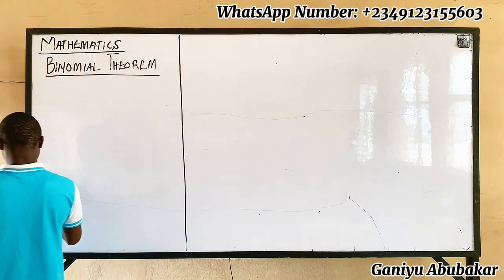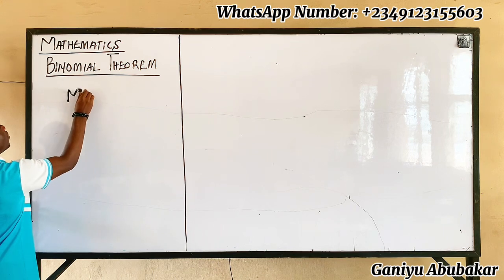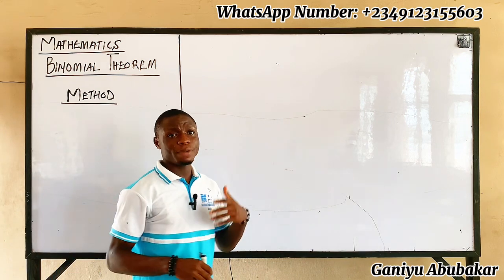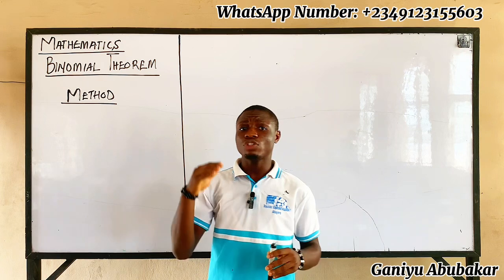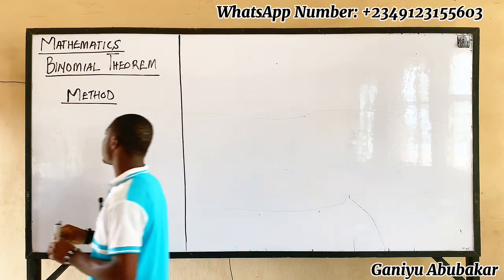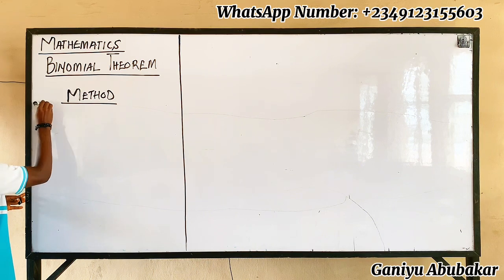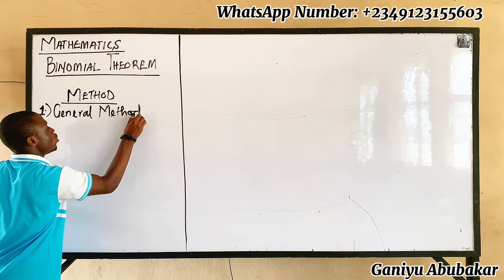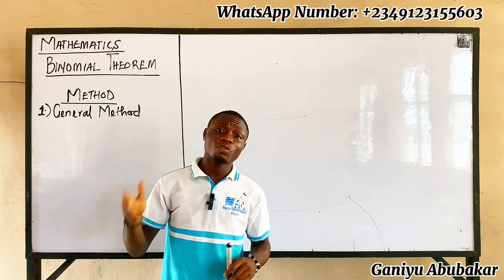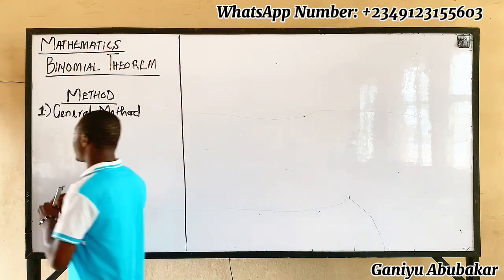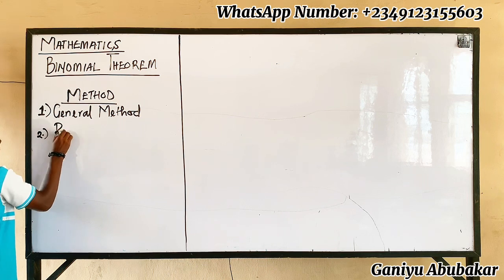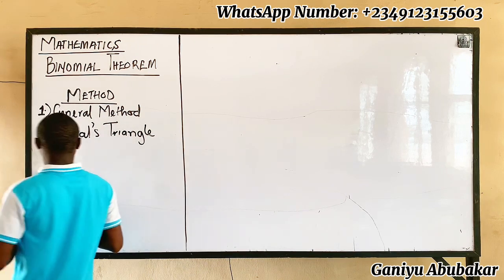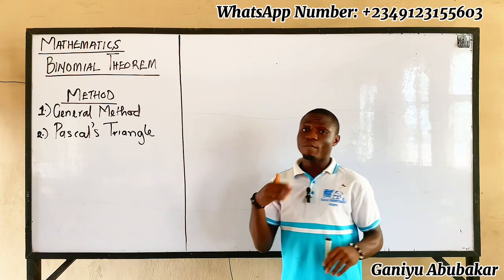Let's look at the methods involved in the study of binomial theorem. When it comes to the study of binomial theorem, there are three methods. The first method is called the general method. The second method is Pascal's triangle.